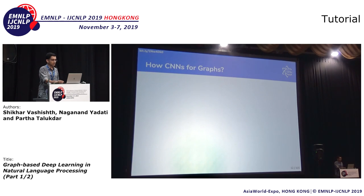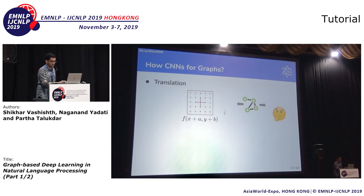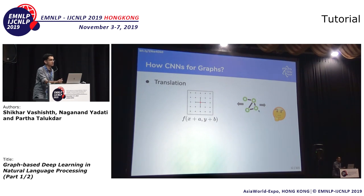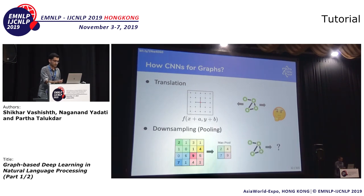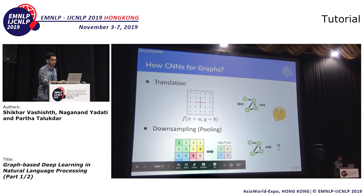CNNs are originally proposed for Euclidean data where operations like translation can be performed — you can translate an image along the X or Y axis. But the same doesn't apply to graphs. There is no notion of translation on graphs, so you cannot apply CNNs directly. Moreover, the pooling operation, which is an integral part of CNNs, cannot be defined on graphs directly — there's no intuitive way to define pooling on a graph. In Euclidean space it's obvious: you have a window and take the maximum element. But in graphs, there is no intuitive way.